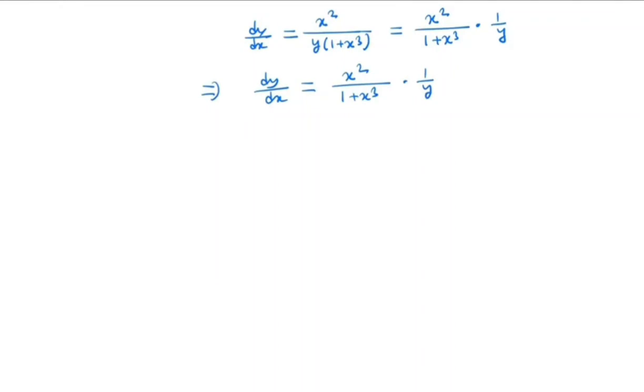So by separating y and x we get y dy = x²/(1+x³) dx. So next what we do, we will do integration on both sides.